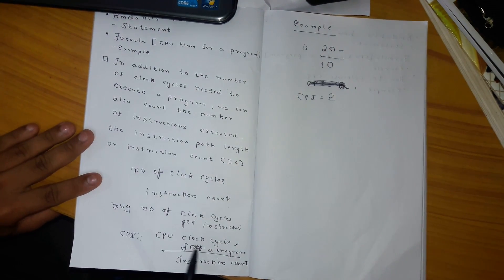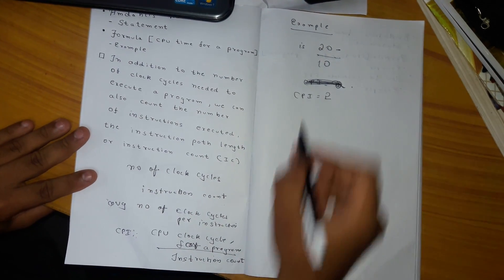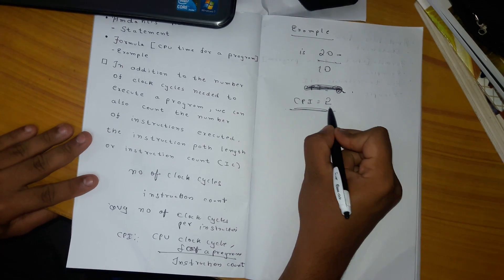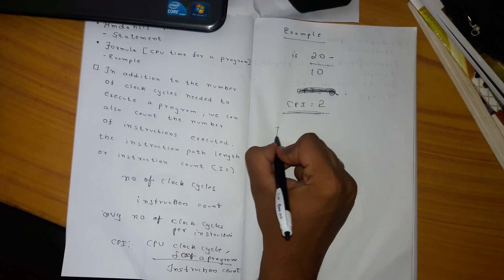For example, if CPU clock cycles for a program is 20 and instruction count is 10, then the clock cycles per instruction equals 2. By transposing instruction count,